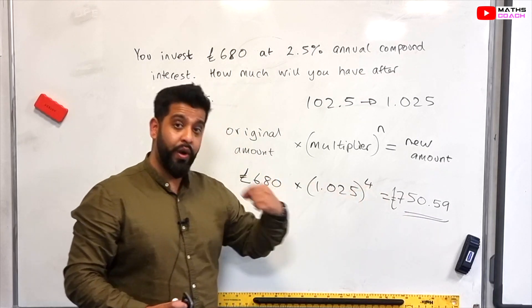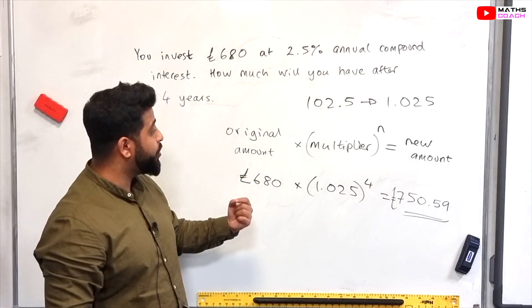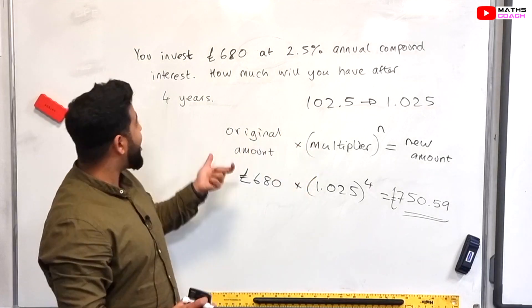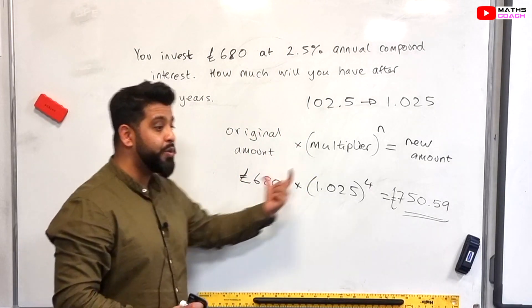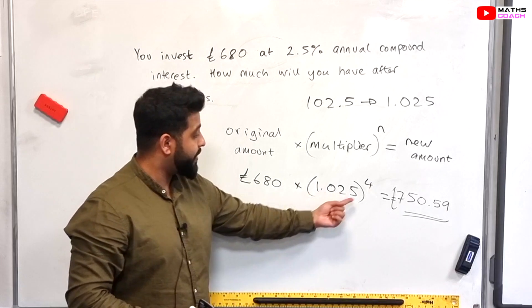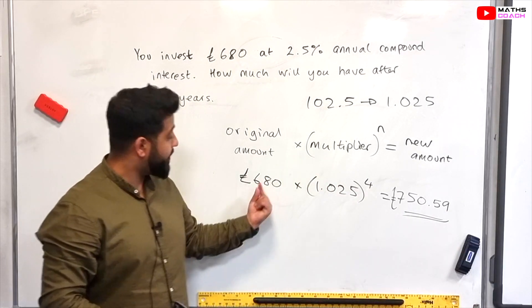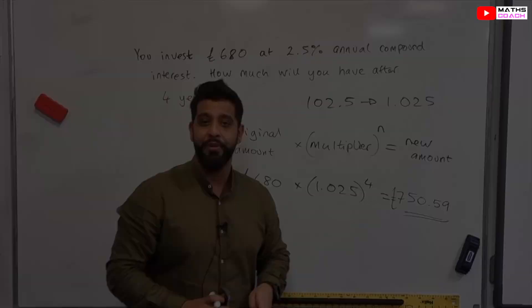Using this power is quite handy because otherwise what we'll have to do is we'll find the amount after the end of one year, collect it, add it on to our original amount and then do another 1.025 of that amount, etc. And we have to keep adding it like that. But this way one line gets you the answer straight away.